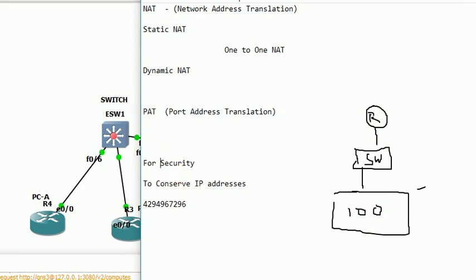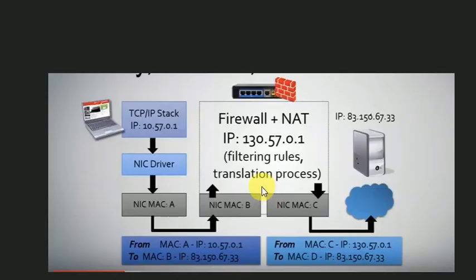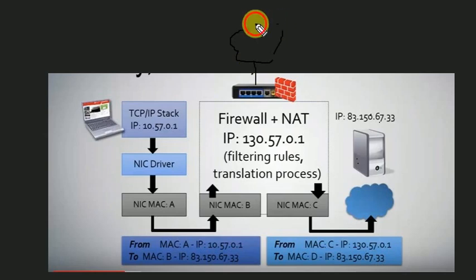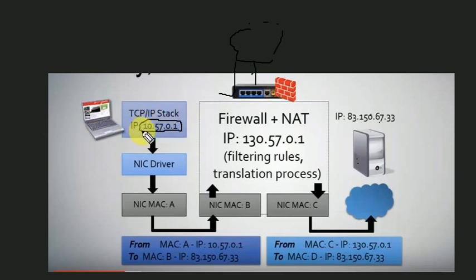NAT is used for security. NAT has two types: one is static NAT and the other is dynamic NAT. Let's talk about the difference in dynamic NAT. Here we have an edge firewall. The internet is connected to this firewall. There is a local system with a private IP installed — 10.57.0.1 — trying to reach Google.com.